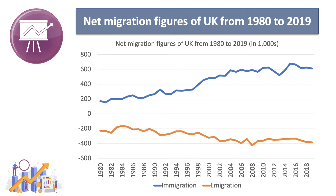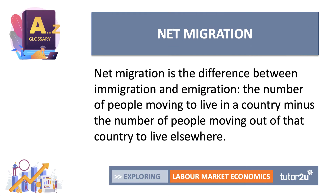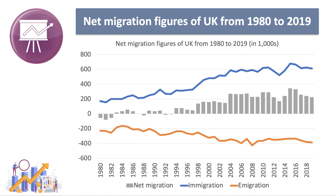A significant increase in both. What matters of course is net migration — the difference between immigration and emigration. It's the number of people moving to live in a country, entering the UK, minus the number of people who decide to move out to live and work elsewhere. If we put the histogram in, net migration is simply the balance between the blue line and the orange line, and it reached a peak of over 340,000 in 2015.